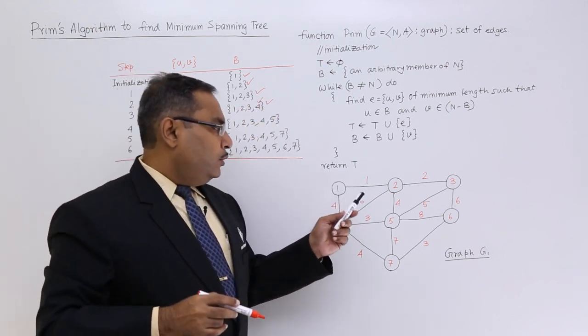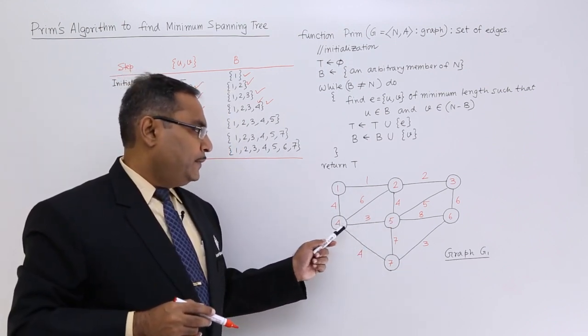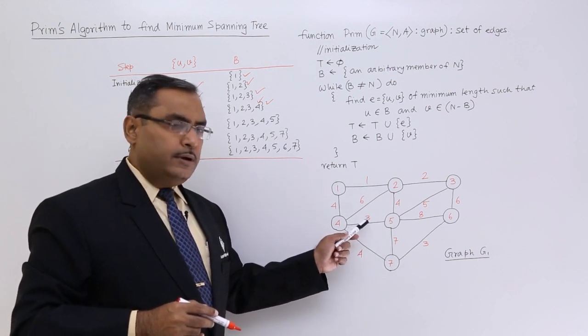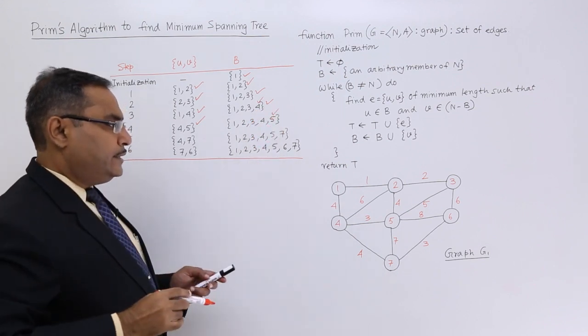Now, from 1, 2, 3, 4, what is the edge we should take? I think that is edge 4-5 with the weightage of 3. We are going for this 4-5, and 5 will be union here.